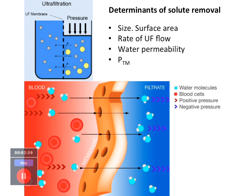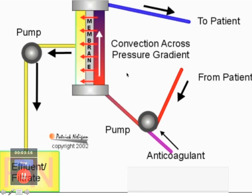There are certain key determinants for solute control. The key determinants are the size and surface area of the dialysis filter or membrane, the rate of ultrafiltrate flow, water permeability, and transmembrane pressure. Essentially, the surface area of the dialyser, the rate at which ultrafiltrate or blood flow is happening, water permeability, and transmembrane pressure are what govern the removal of solutes and solvents.